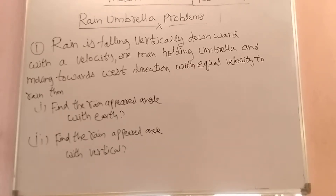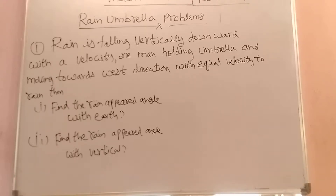Rain is falling vertically downward with a velocity. One man holding an umbrella and moving towards the west direction with equal velocity to the rain. Find the rain's angle with the earth and find the rain's angle with the vertical.